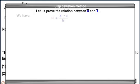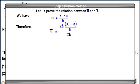Step deviation method. Let us find the relation between u bar and x bar. We have ui equals xi minus a by h. Therefore, u bar equals summation fi times xi minus a divided by h, divided by summation fi.